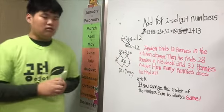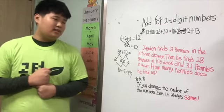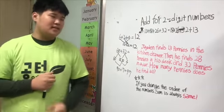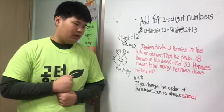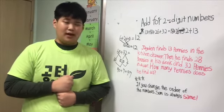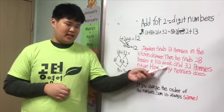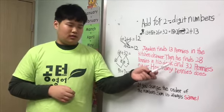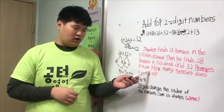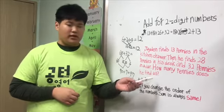Look at this sentence. Jaden finds 13 pennies in the kitchen drawer. Then he finds 28 pennies in his desk and 32 pennies in a jar. How many pennies does he find in all?